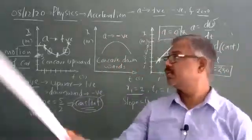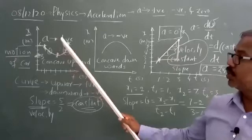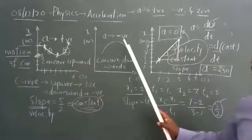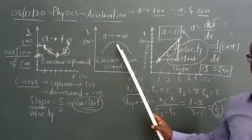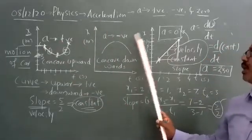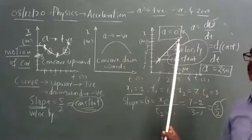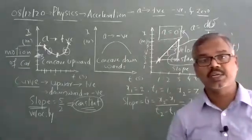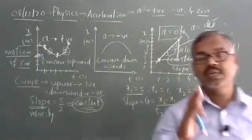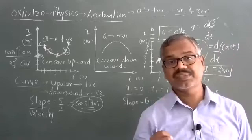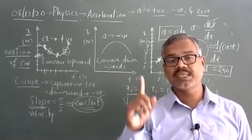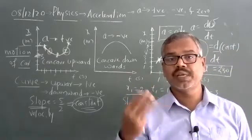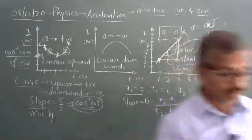Acceleration can acquire a positive value when the curve is concave upward, a negative value when concave downward, and acceleration is zero when the slope is linear. For X-t graphs, acceleration is positive, negative, or zero.